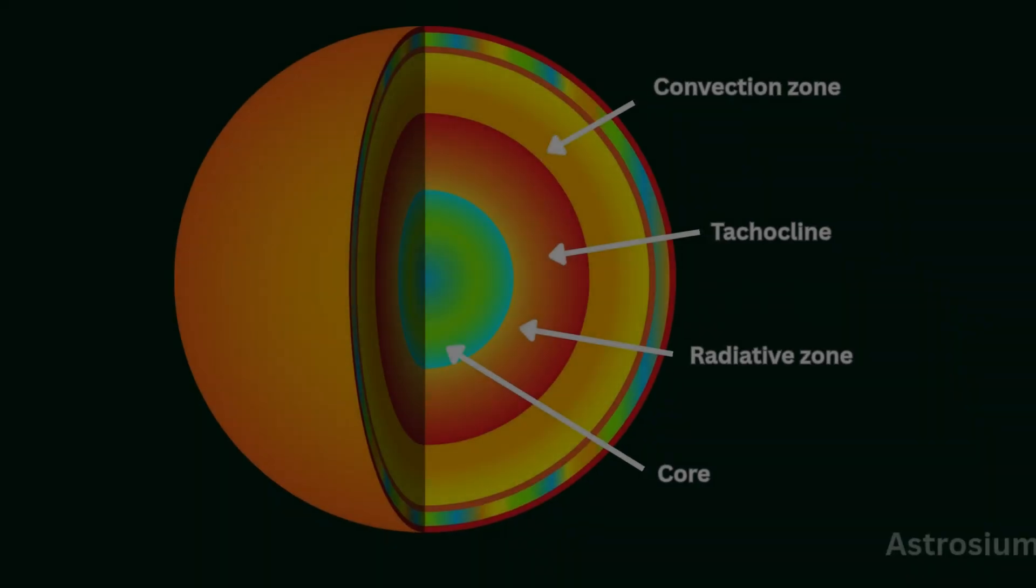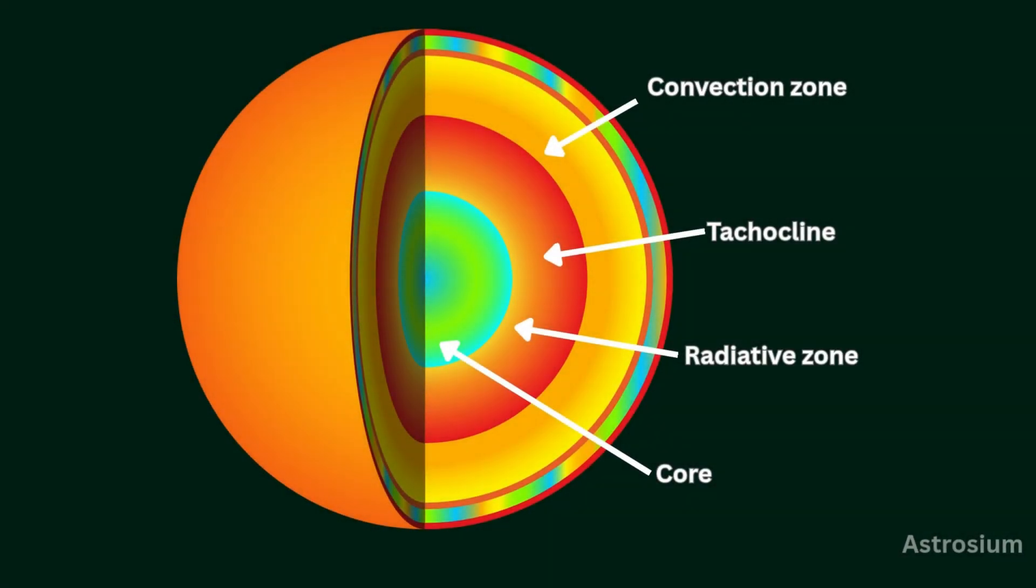What they've found is a layered powerhouse. At the core, there's the radiative zone, where energy slowly leaks outward through radiation. Above that, the convective zone, where hot plasma churns and bubbles like a boiling pot. And right between them, a mysterious boundary called the tachocline, a thin, turbulent layer scientists believe is the engine room for the sun's magnetic field. It's a peek into the sun's secret machinery, and it's only just the beginning.